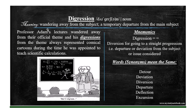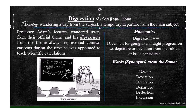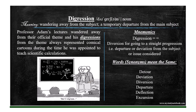Digression means wandering away from the subject, or a temporary departure from the main subject. Digression — diversion from going in a straight progression. That is, departure or deviation from the subject or issue considered. Digression also means detour, deviation, diversion, departure, deflection or excursion. Prof. Adam's lectures wandered away from their official theme, and his digressions from the theme always represented comical cartoons, during the time he was appointed to teach scientific calculations.